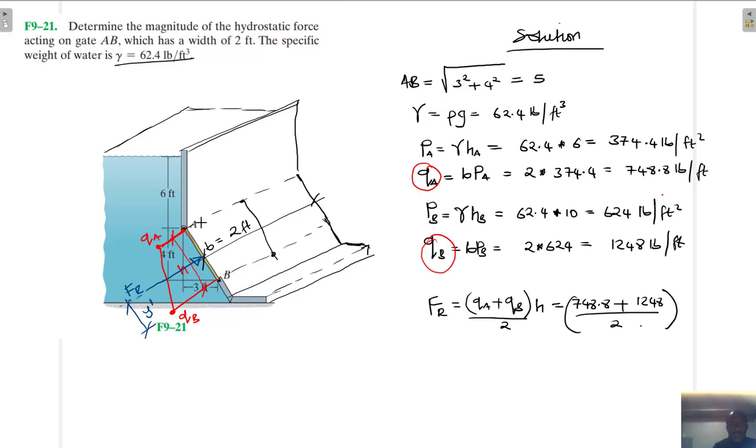And what's my height? My height for this, we found it to be what? The height, which is equal to AB. See the height of AB there, is 5. And my resultant force is going to be equal to, so 1248 plus 748.8 divided by 2 times 5. So we are finding our resultant to be 4992 pounds.